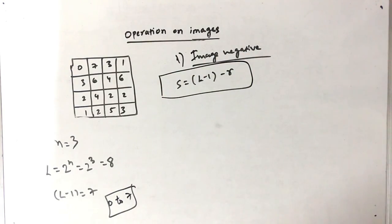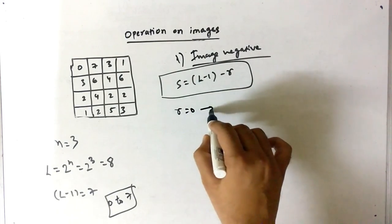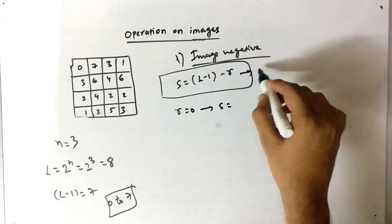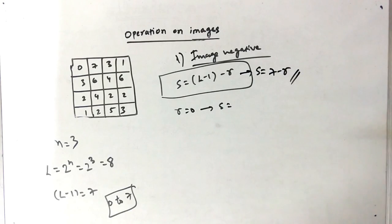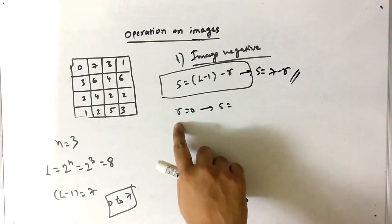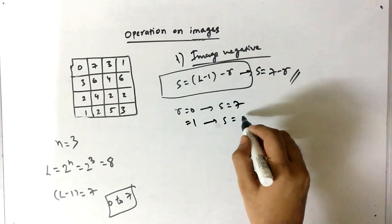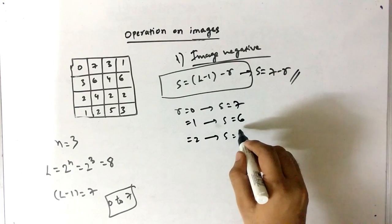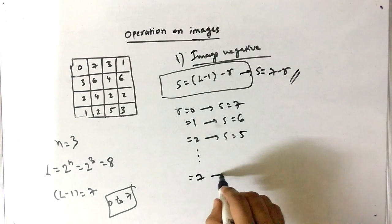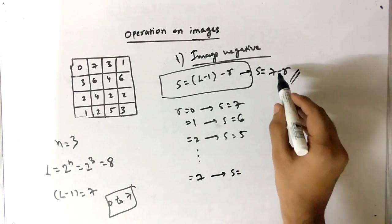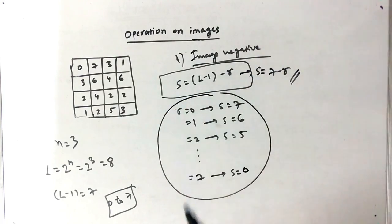Now just plug in and get the value. The equation simplifies to S = 7 - R. When R is 0, S is equal to 7. When R is 1, S is equal to 6. When R is 2, S is equal to 5, and so on. When R is equal to the maximum value 7, then S equals 7 minus 7, which is 0.